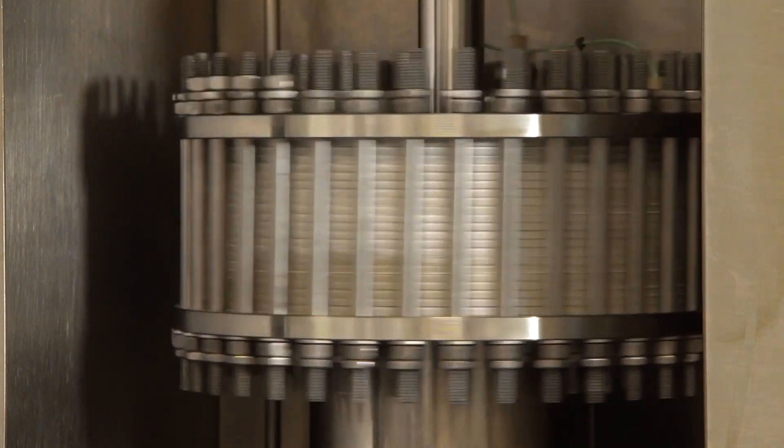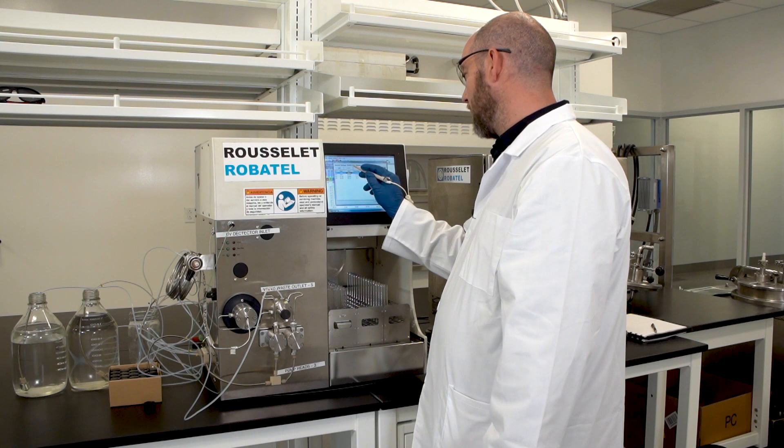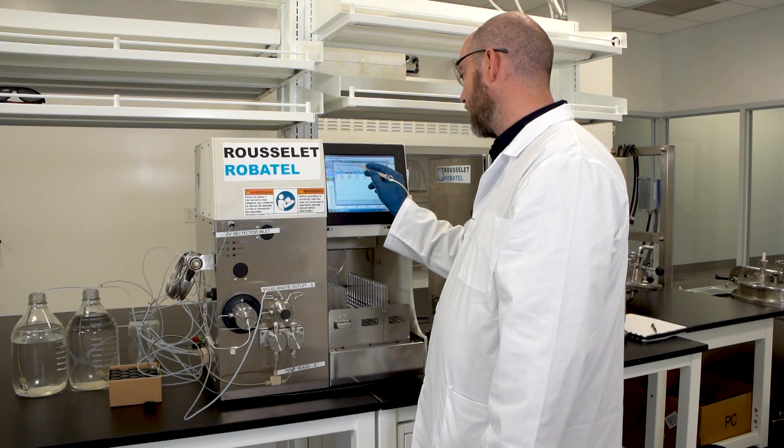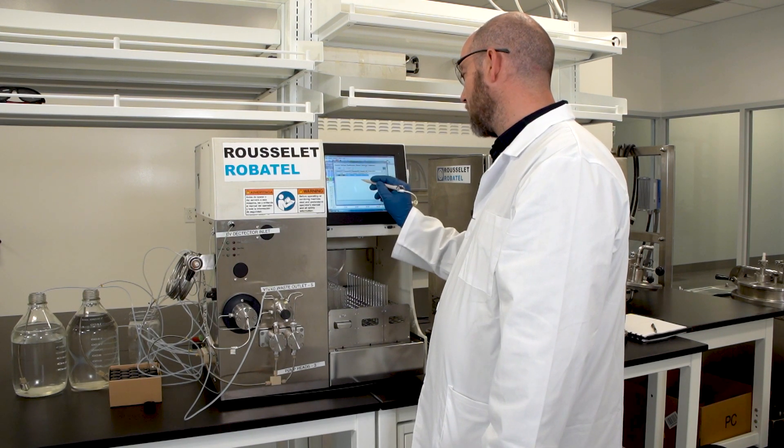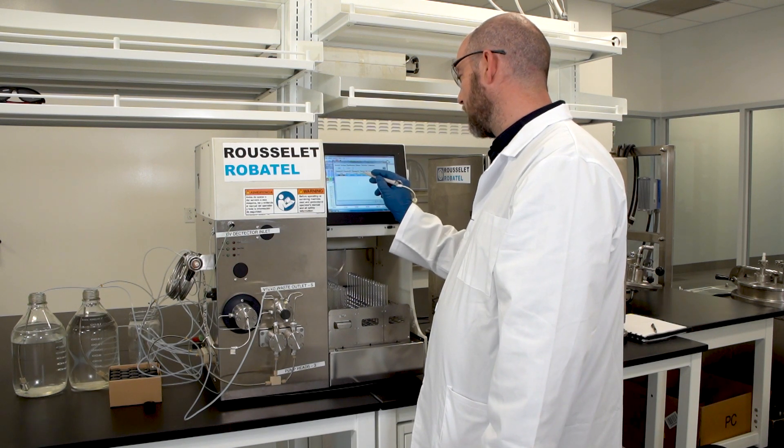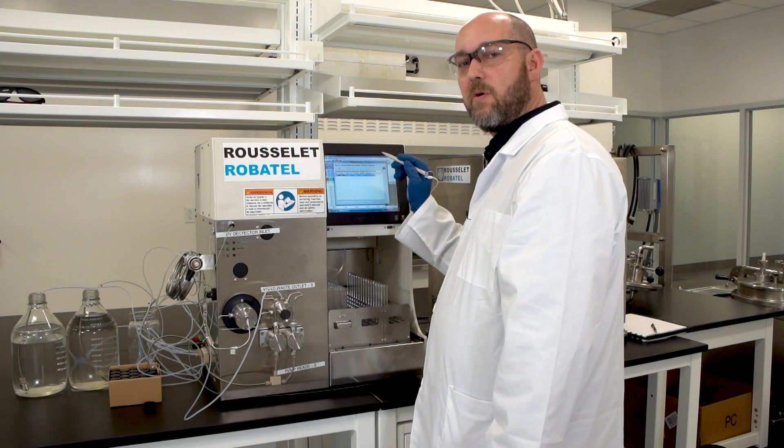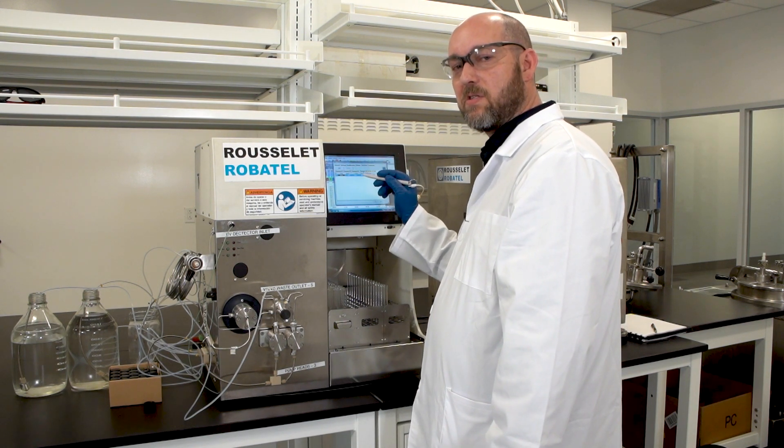So to start the system, I have my method already loaded. Just to briefly go over the method, you have an equilibration step. You have an elution step. You choose what wavelengths you're going to be detecting. I have mine set specifically to general cannabinoids and then one for specifically THC so that I know when THC has stopped eluting out of the system.